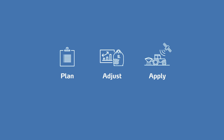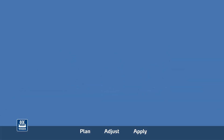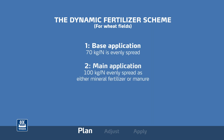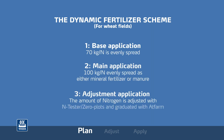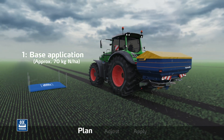Precision nitrogen management requires making dynamic fertilizer decisions, which enables adjustments before the final application. An example of a dynamic fertilizer plan could look like this: three nitrogen applications are planned. A fixed amount of mineral nitrogen fertilizer is spread for the first application, typically about 70 kilograms of nitrogen per hectare.